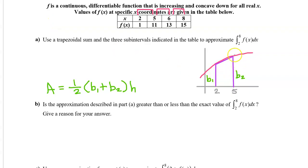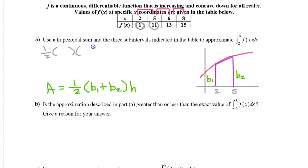Let's start with the interval from 2 to 5. Notice that both bases are touching the curve. Therefore, base 1 will just be the value of the function at x=2, which is 1, and base 2 will be the value of the function at x=5. Base 1 plus base 2 is 12. The height of the trapezoid is the width of this interval, which is 3.